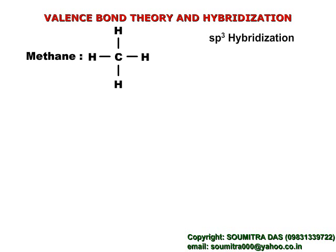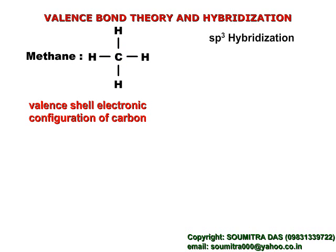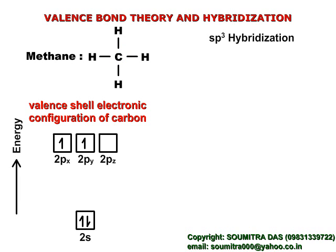Let us proceed with the example of the methane molecule. In methane, the central atom is carbon, which has the following valence shell electronic configuration. Now the first step.